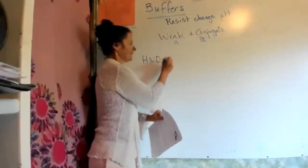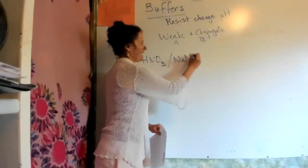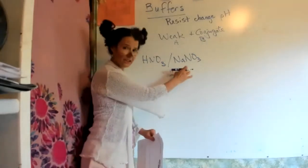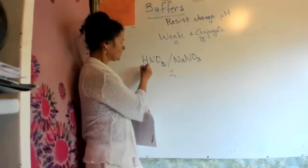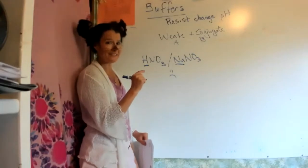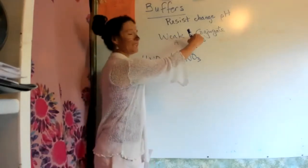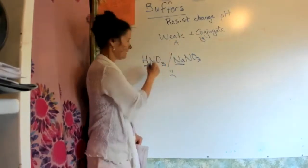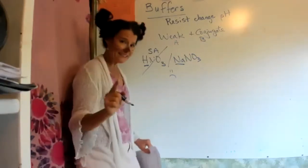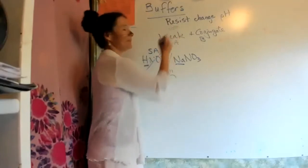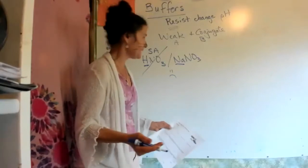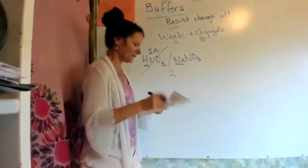HNO3 and NaNO3 is a big frowny face — they are conjugates, differing by one hydrogen, but it is not a buffer. There are two keys to a buffer: not only must they be conjugates, but they have to be weak. HNO3 is a strong acid, so it does not work as a buffer. To be a buffer you have to be able to go back and forth — a strong acid is a one-way street. So A is no good.